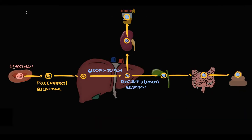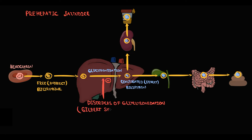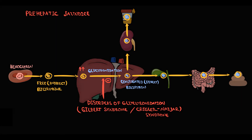The second cause of prehepatic jaundice is hereditary disorders of conjugation. In hereditary disorders of conjugation, such as Gilbert syndrome or Crigler-Najjar syndrome, glucuronidation is not working properly. The liver is not capable of converting free bilirubin into conjugated bilirubin. As a result, the level of free bilirubin increases and the level of conjugated bilirubin decreases. This results in decreasing concentration of conjugated bilirubin in the urine, causing urine discoloration, and decreasing concentration of conjugated bilirubin in the feces, causing discoloration of the feces.